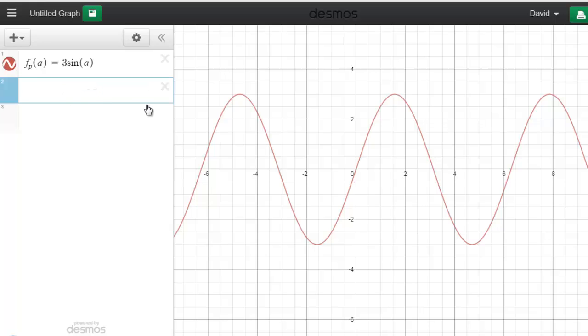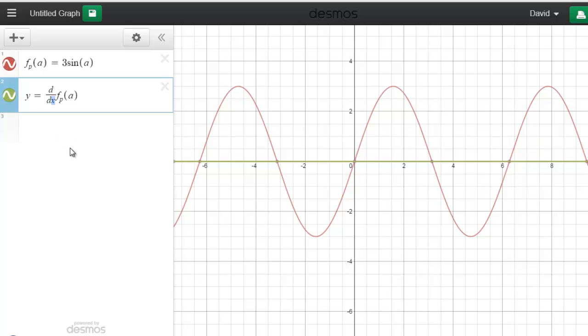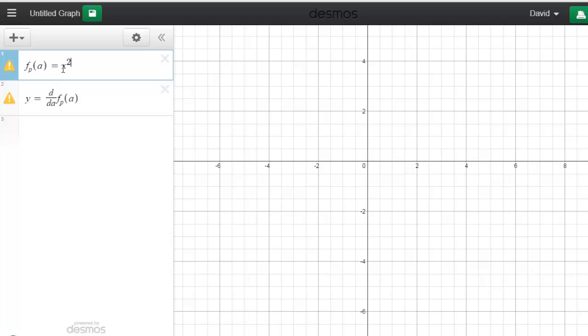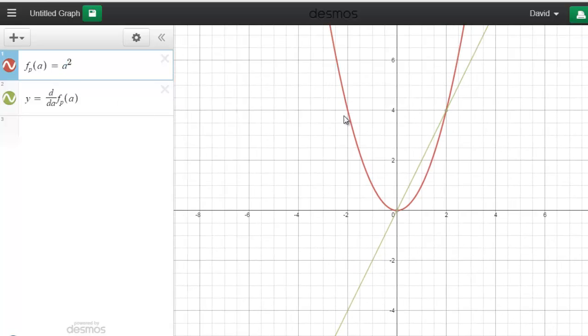We're in calculus, so we might want to do some calculus things. I can say y equals d slash dx. So that's their symbol for derivative. And what's the function I want to take the derivative of? I want to take the derivative of f subscript p of a. I don't want x here because I want the derivative with respect to a, because a is my variable. And as you can see, it's displayed the derivative. Let's change it to a function that you recognize. Not x squared, a squared. So here's x squared, and you know its derivative is 2x, and there's the derivative function.